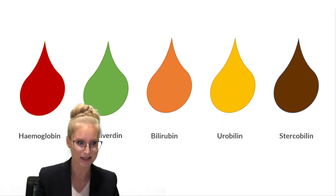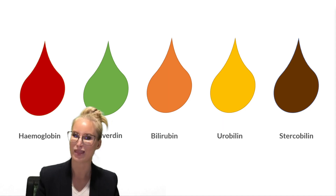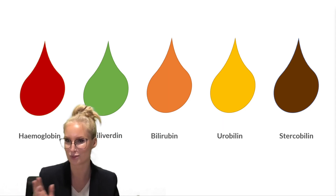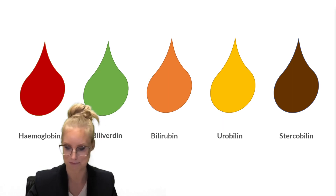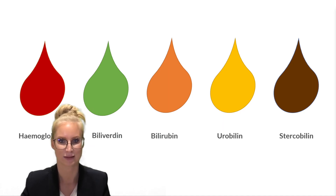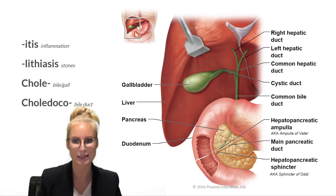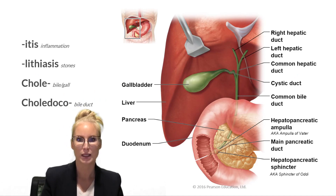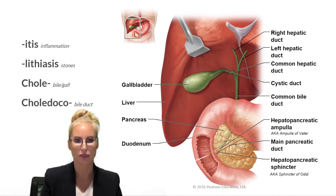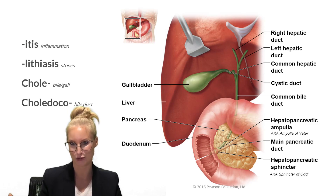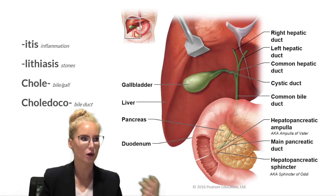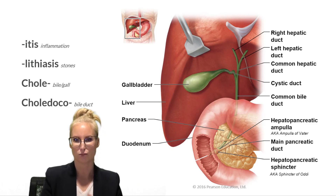You might have noticed that bruises start off red, then go cream, then an orangey-brown colour — that's the breakdown of the heme. Now, when a word ends in '-itis' it means inflammation; '-lithiasis' means stone; and the prefix 'chole-' means bile or gall, usually relating to the gallbladder.